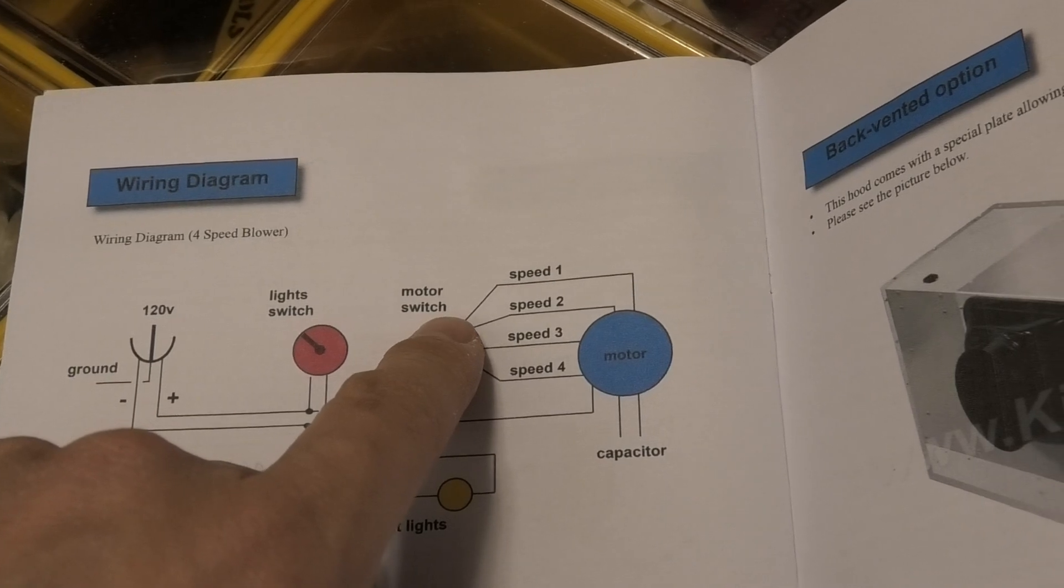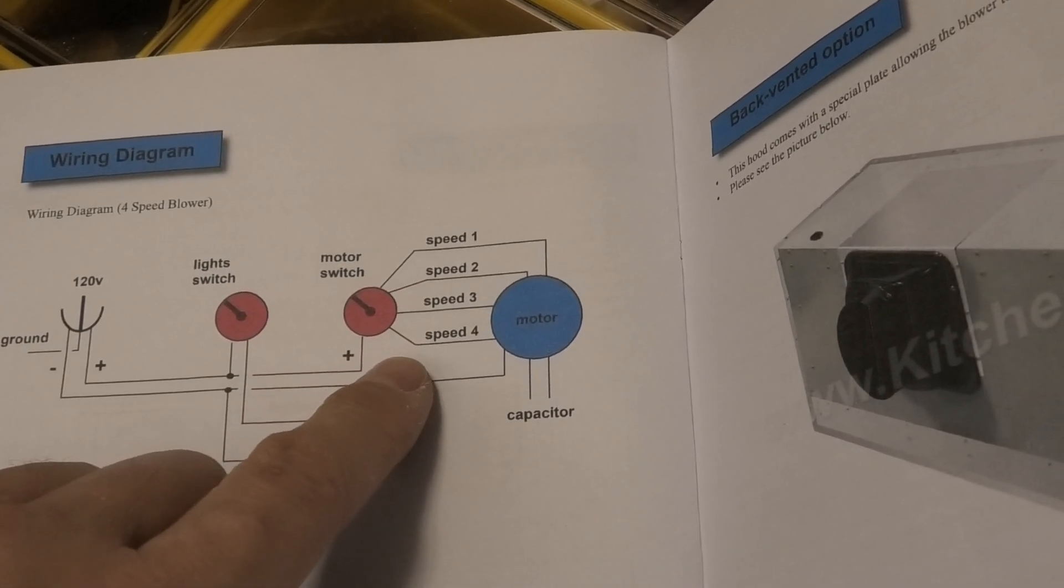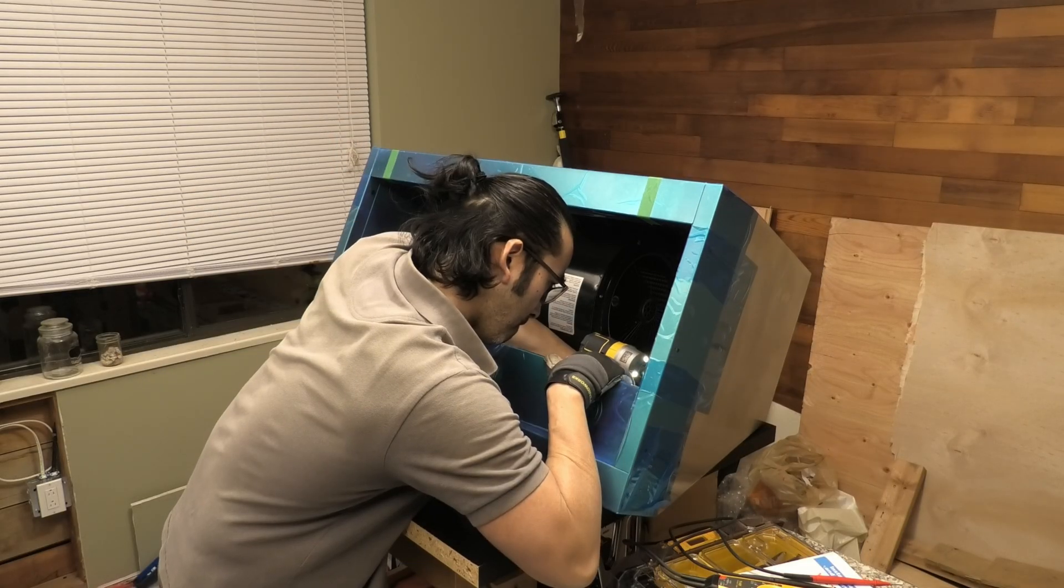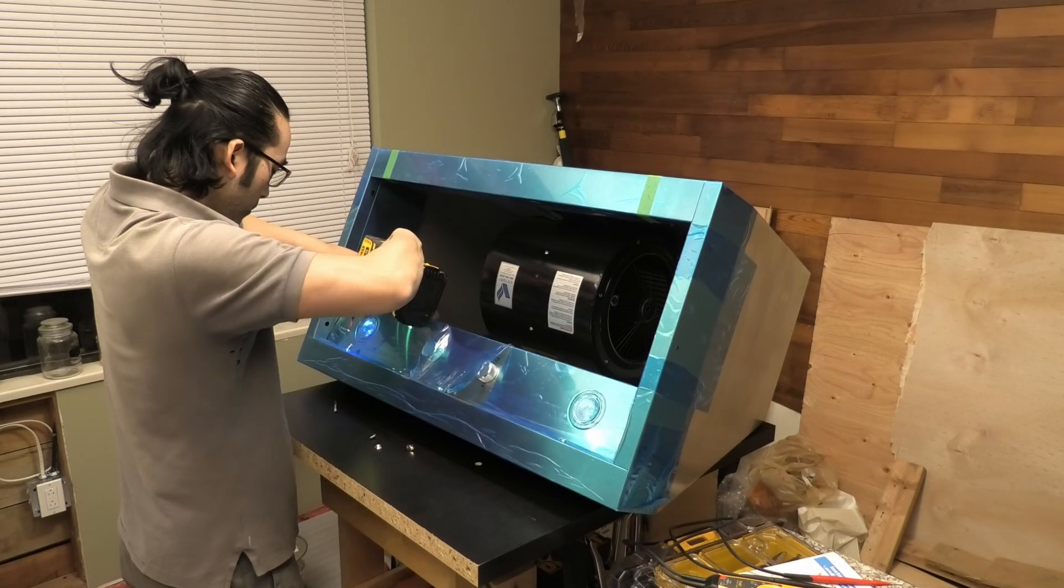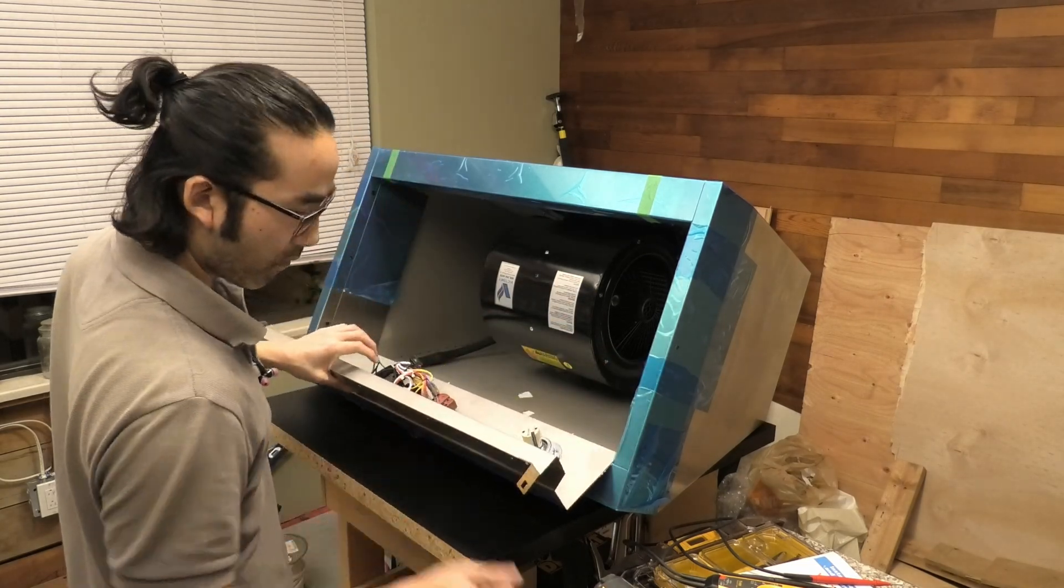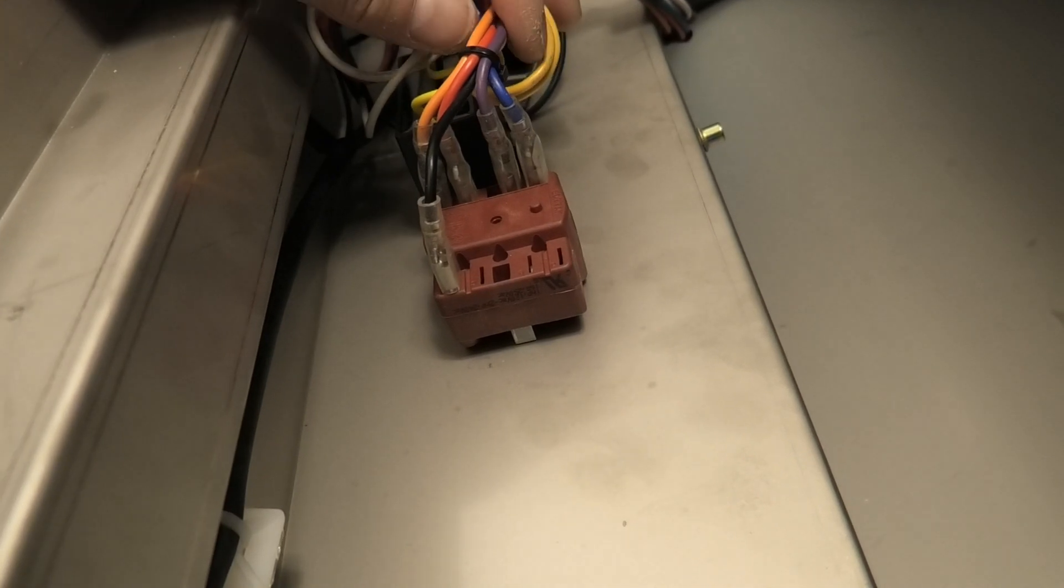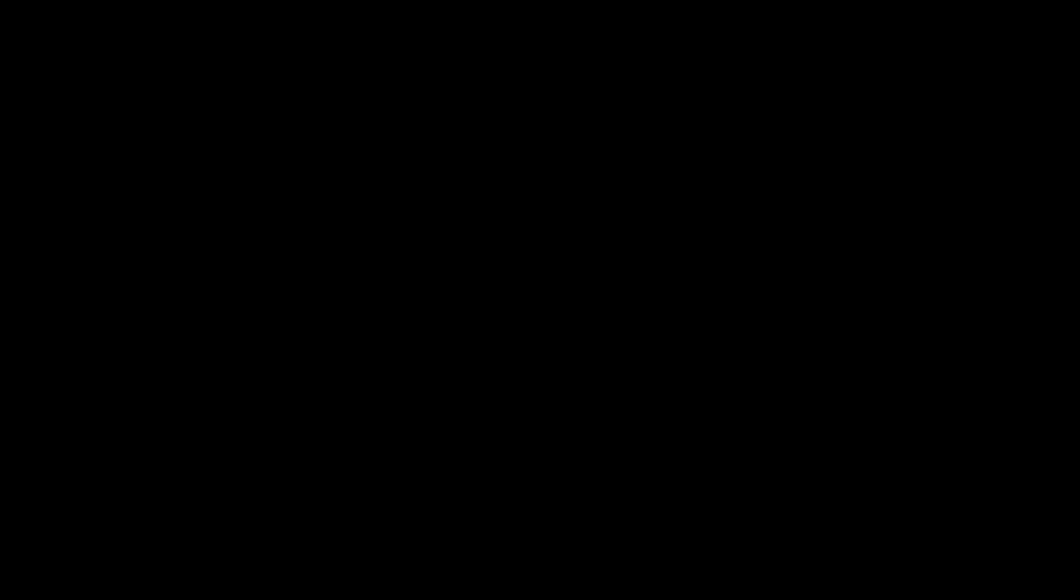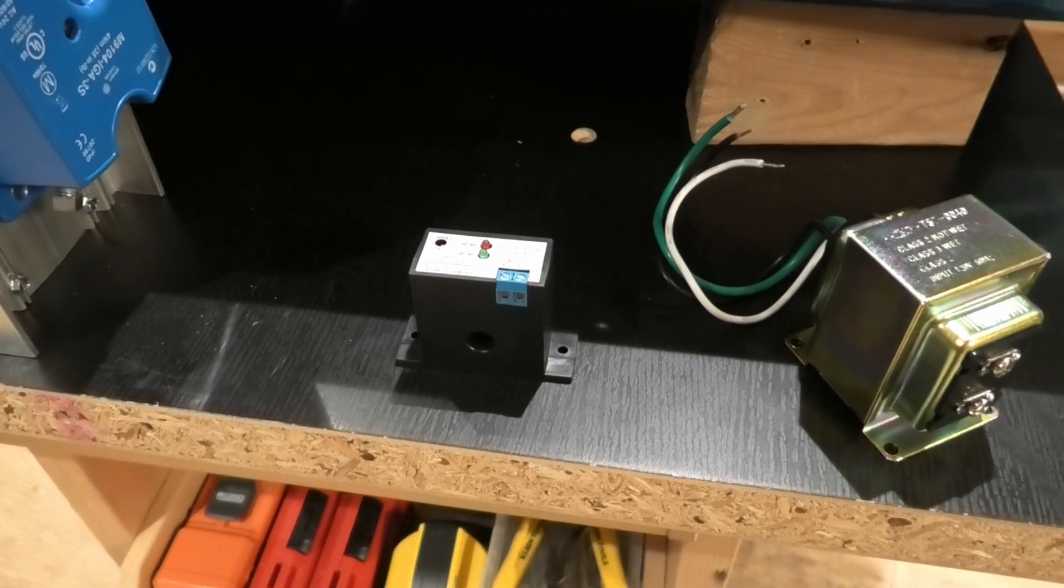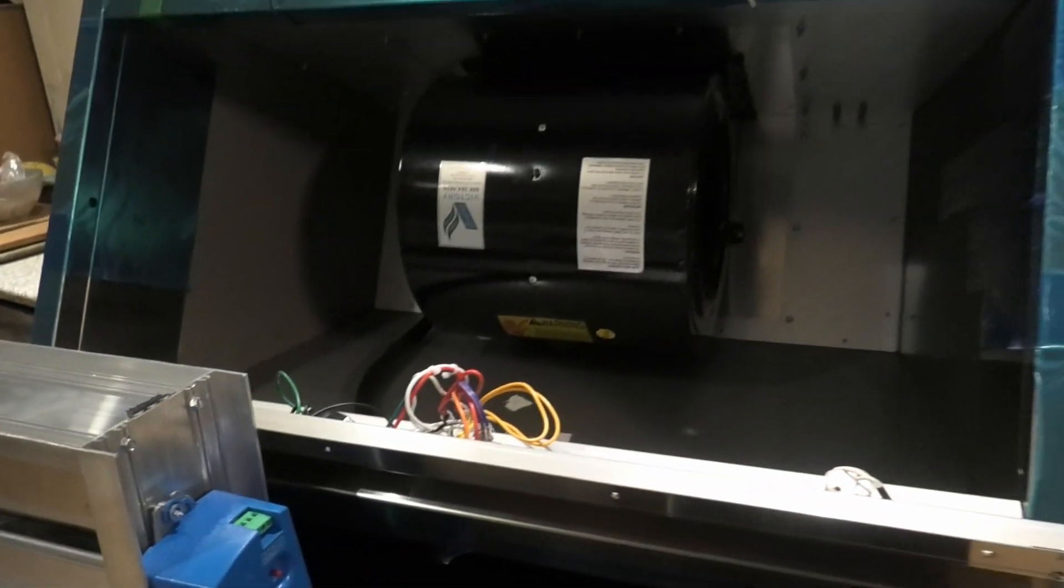So unlike the damper which is normally closed, this switch is normally open. So this motor has four settings. Just for this test, I'm gonna hook up speed two and three through the current sensor switch, and this is so I can use one and four as the control. I don't want the system to activate the instant I turn on the hood. The black stays, the rest need to come off. Transformer, current sensing switch, motorized damper, the hood.